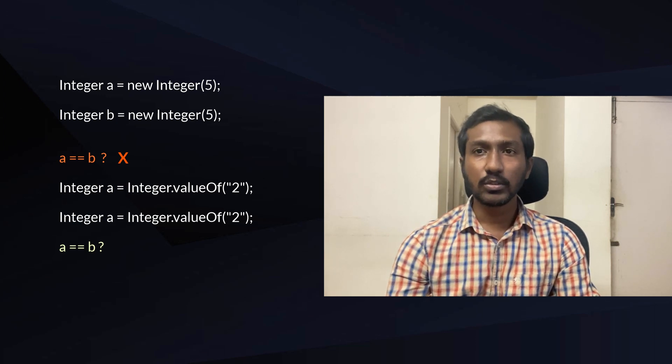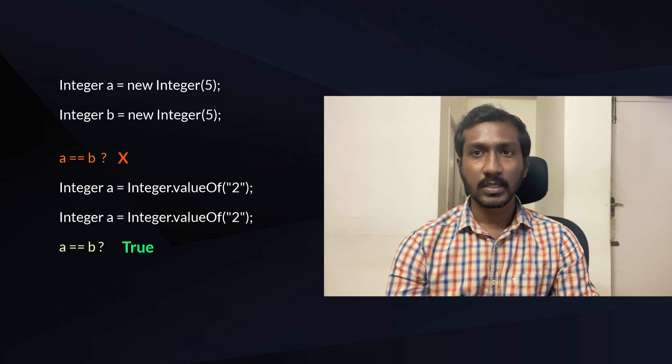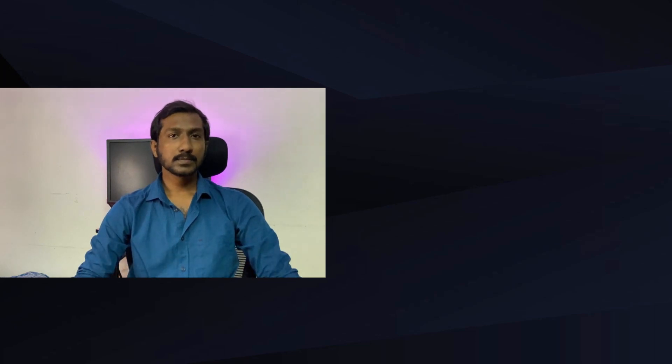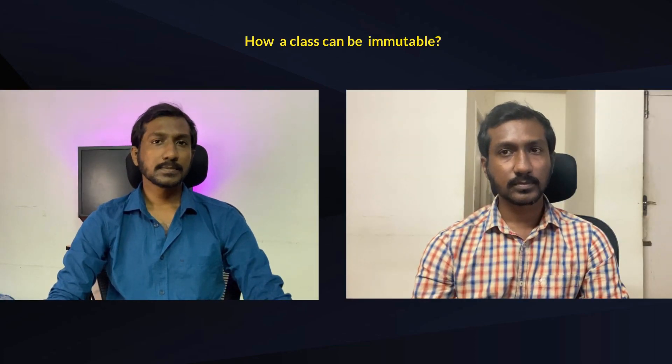Consider a static method in a parent class — can we override it in the child class? No. Static methods belong to the class, not to instances. If you define the same static method in a child class, it creates a separate method, not an override. Overriding a static method is not possible and is meaningless.